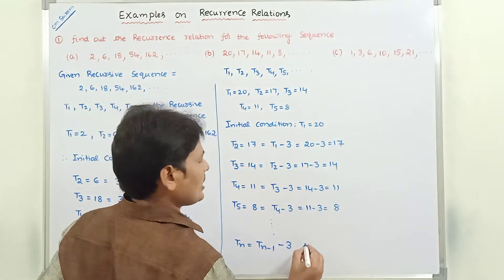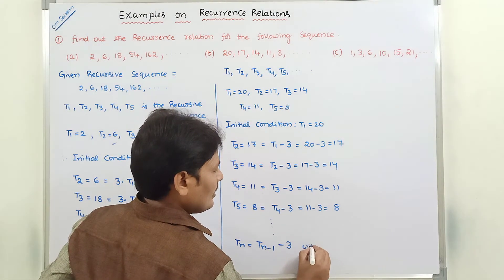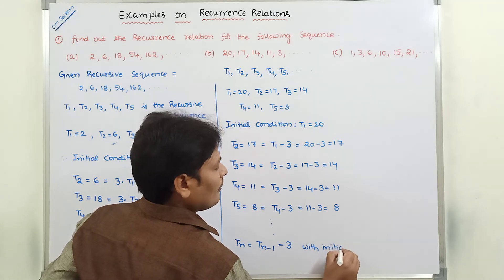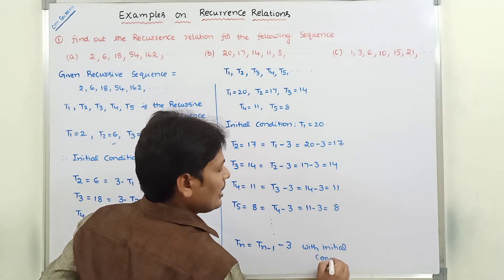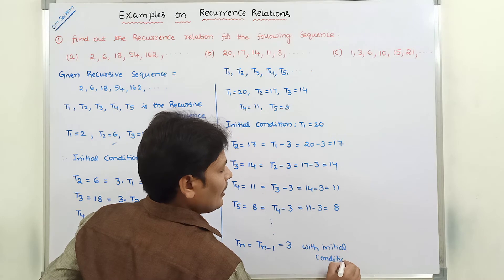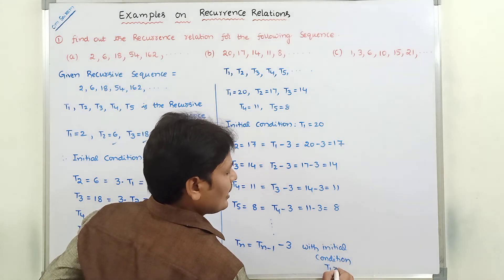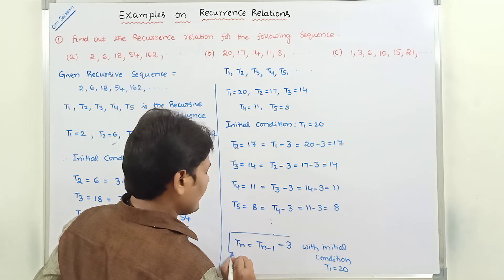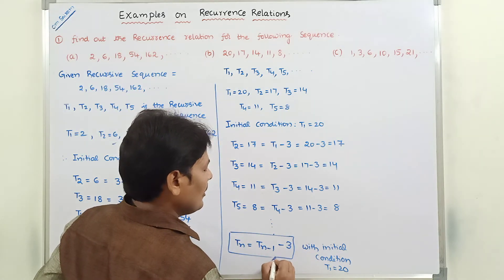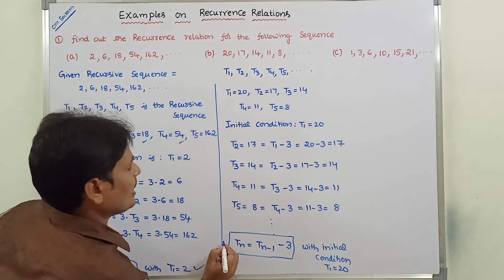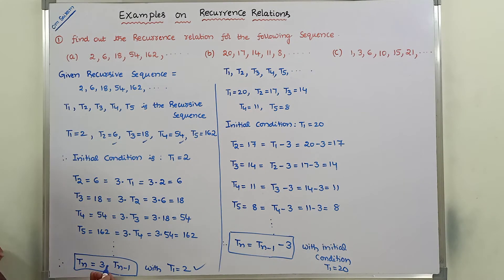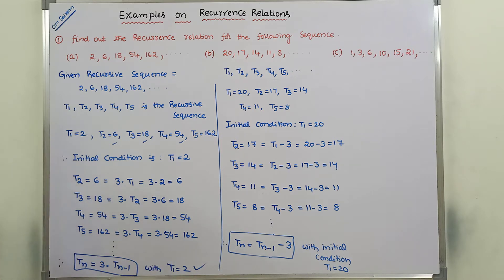With initial condition T1 = 20, this is the final recurrence relation Tn = T(n-1) − 3 with T1 = 20 for the given recursive sequence.